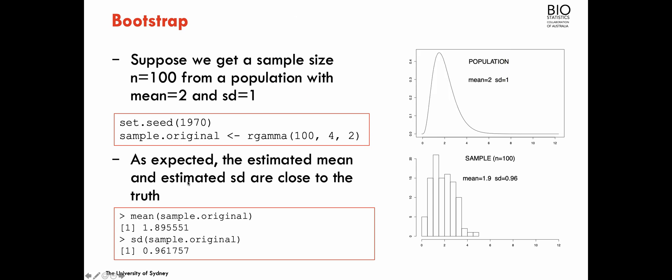If we compute the mean and standard deviation in this sample of size 100, I obtain a mean of 1.9 and a standard deviation of 0.96 — very close estimates to the true parameters of the population, as expected, because samples tend to behave similarly to the population.